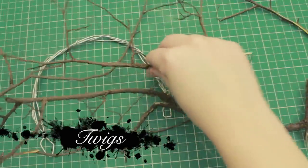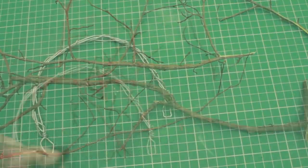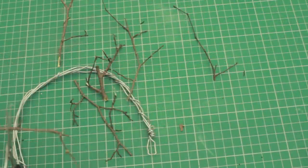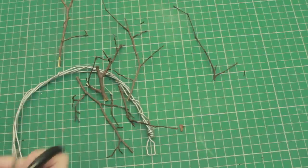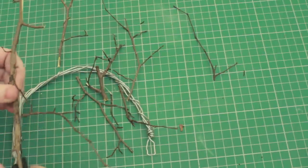Then you want to get some interesting twigs, and by interesting I mean don't get anything which just grows straight up—that's boring. Find something which looks like little branches, and we're going to start weaving these into the wire crown that we've made.